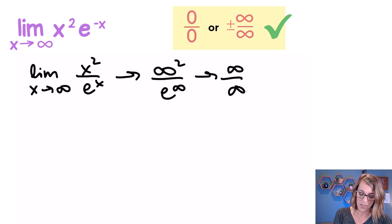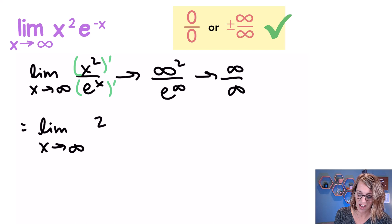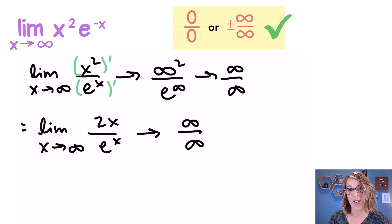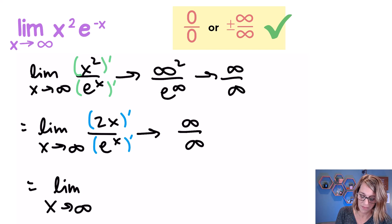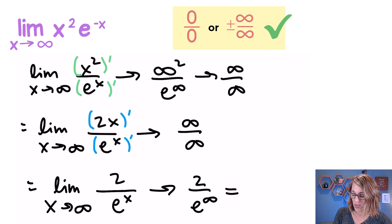So I can apply L'Hôpital's rule and take the derivative of the numerator and the derivative of the denominator. This gives the limit as x goes to infinity of 2x over e to the x. But as I analyze this limit, the numerator and denominator both go to infinity again — so I need to apply L'Hôpital's rule a second time. Taking derivatives again, the numerator becomes just 2 and the denominator's derivative is e to the x, giving the limit as x goes to infinity of 2 over e to the x. As x goes to infinity, 2 over e to the infinity goes to 0.